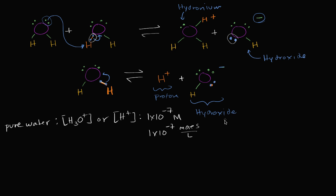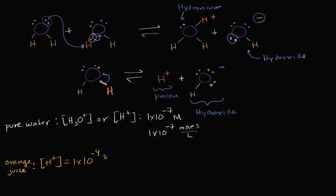For example, orange juice. The hydrogen ion concentration — and once again I could also say this is a hydronium concentration — for orange juice wouldn't be atypical to find a hydrogen ion concentration of about 1 times 10 to the negative 4 molar. I looked it up on the internet; there's actually a range, kind of in the mid-3s to low-4s of hydrogen ion concentrations for orange juice. And as you can tell, this is actually a much higher concentration than pure water — the exponent is less negative, so this is a higher concentration.